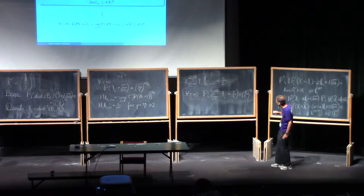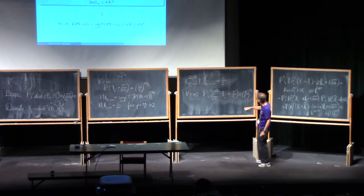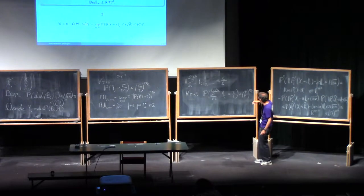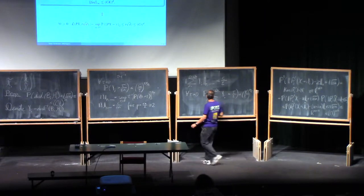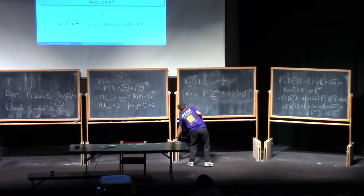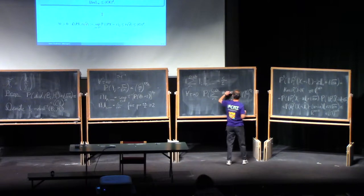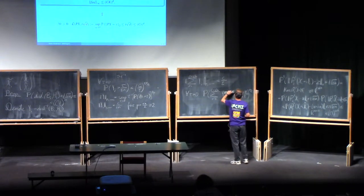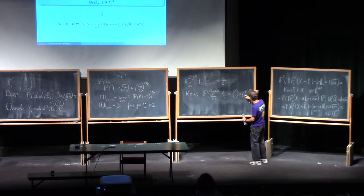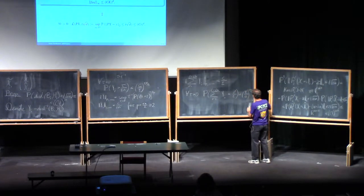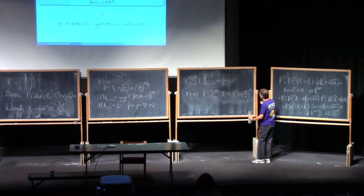Before continuing, let's do one cosmetic thing: I don't like the exponent epsilon n over 2. I will replace tau by theta squared, so I'll have theta squared in the denominator, and this will give me the exponent epsilon n.